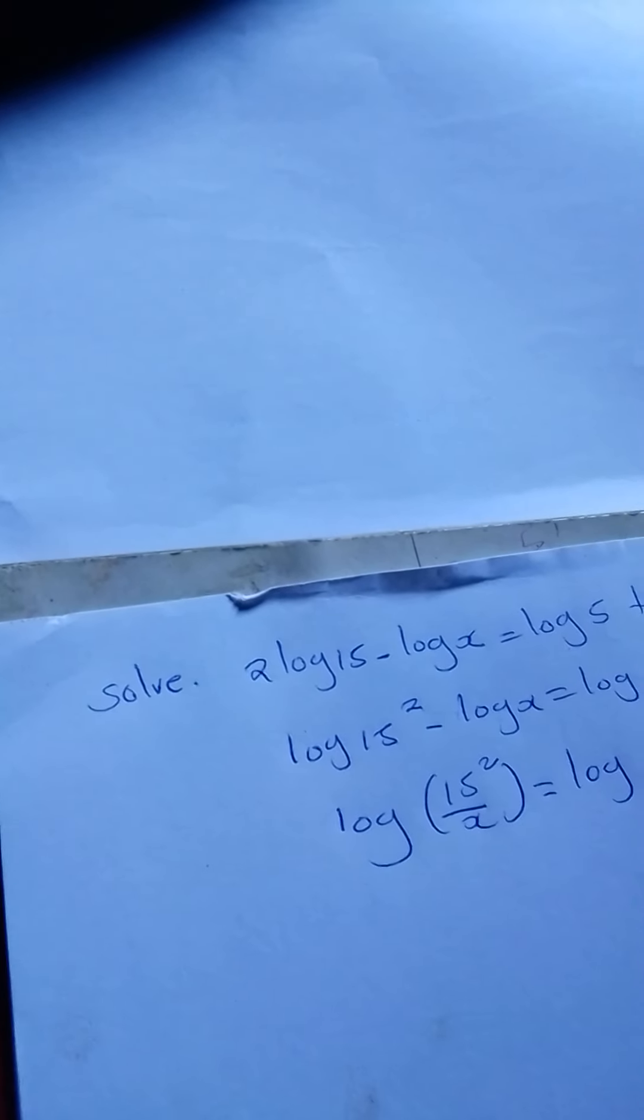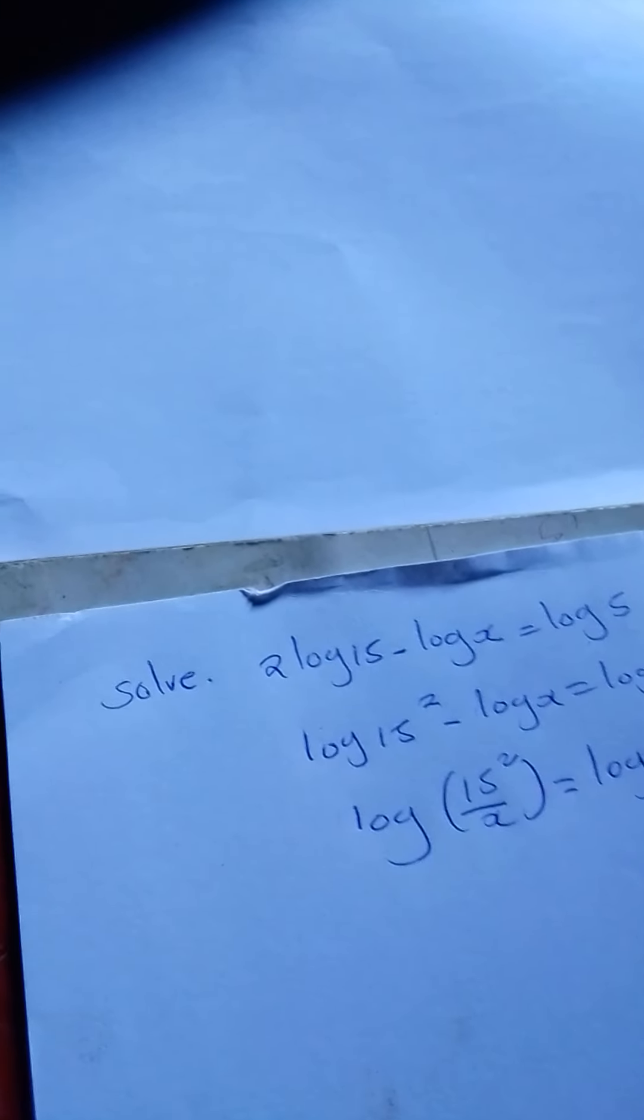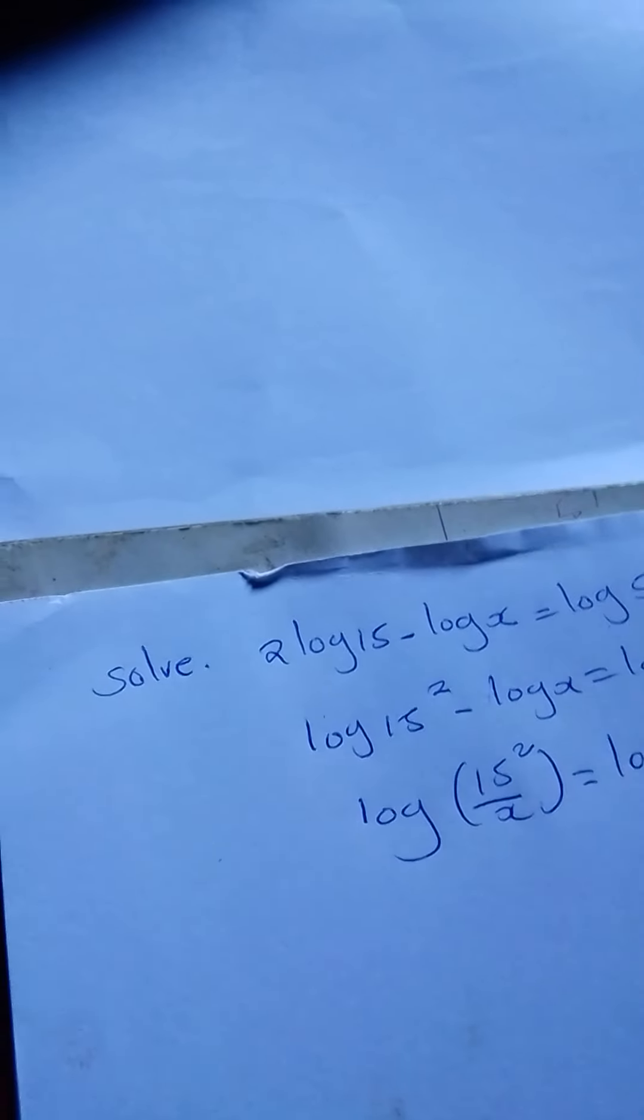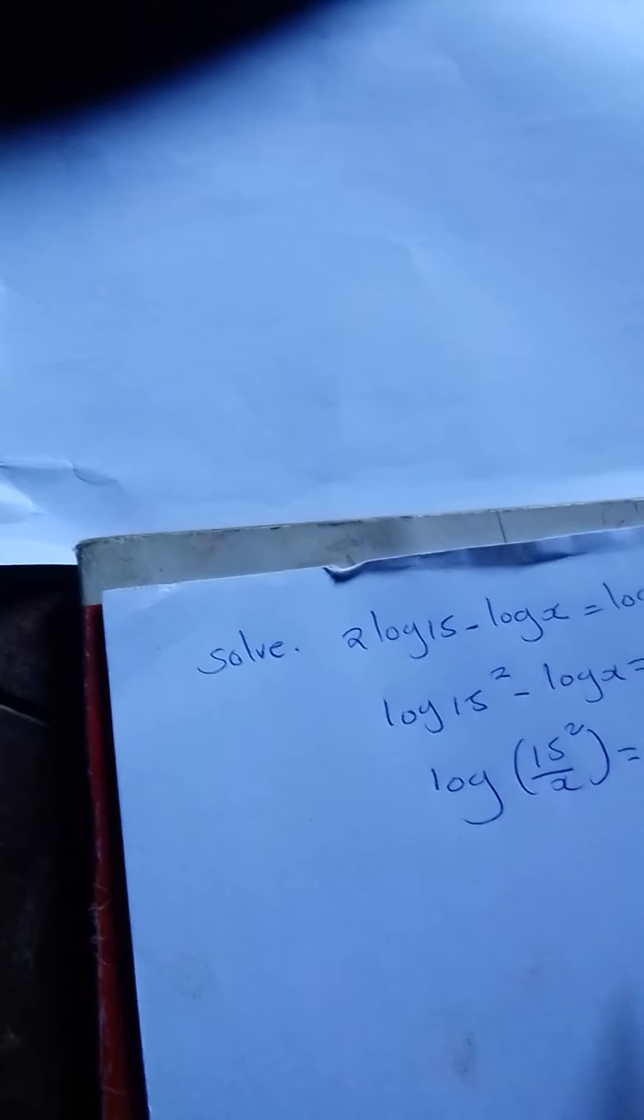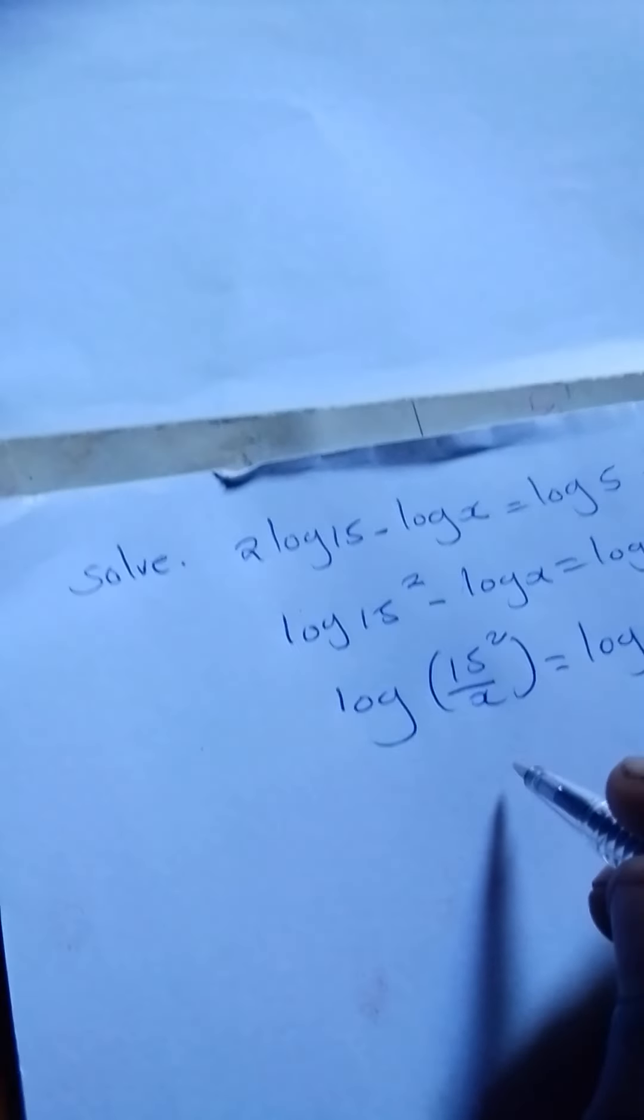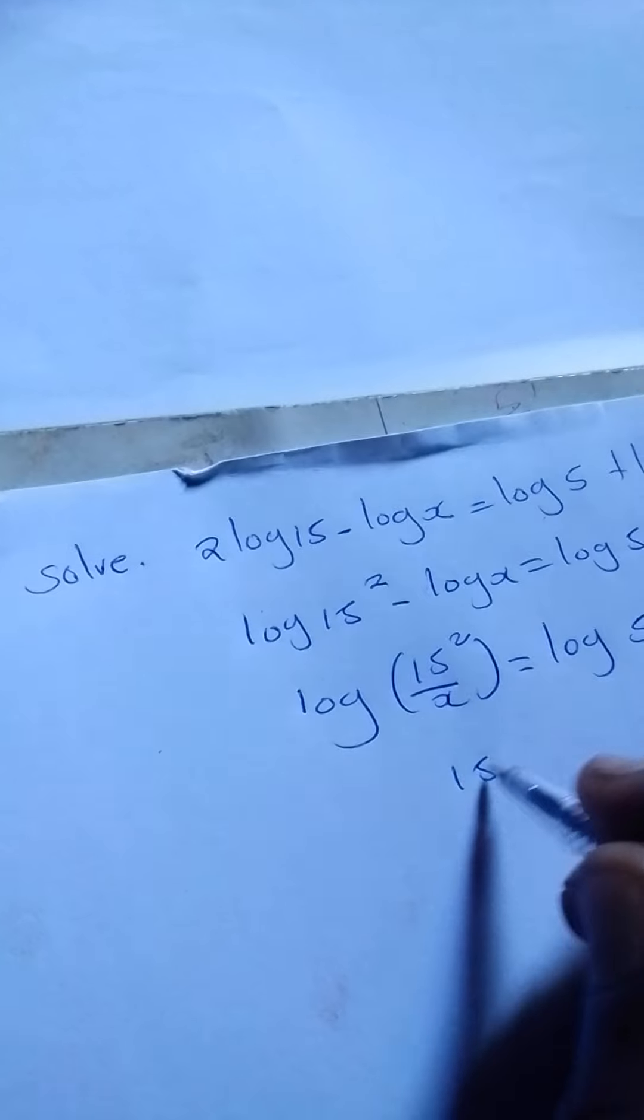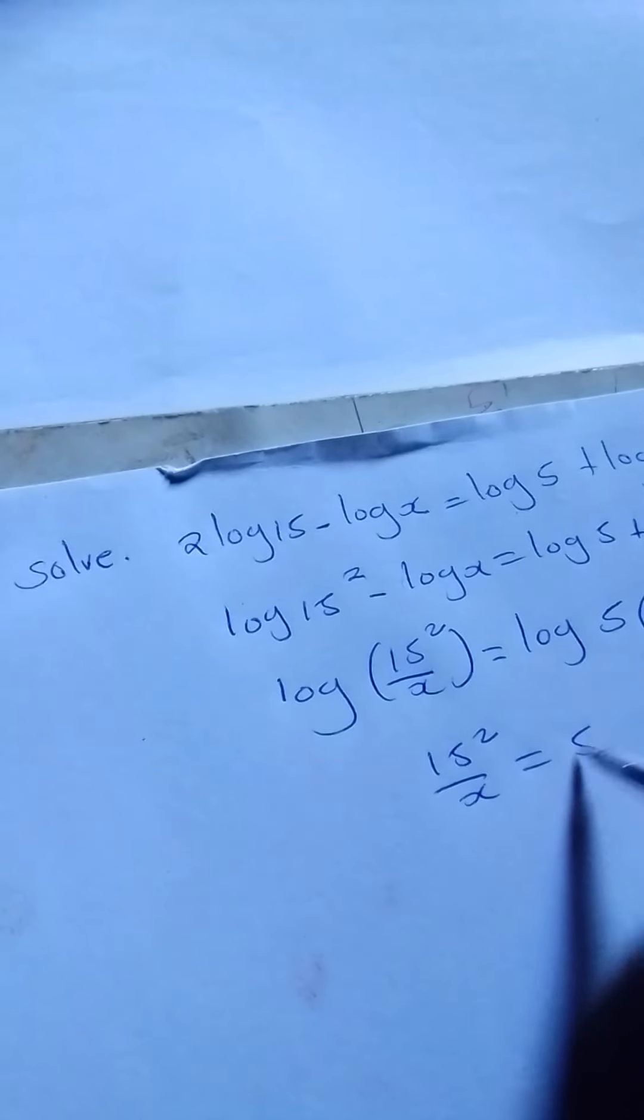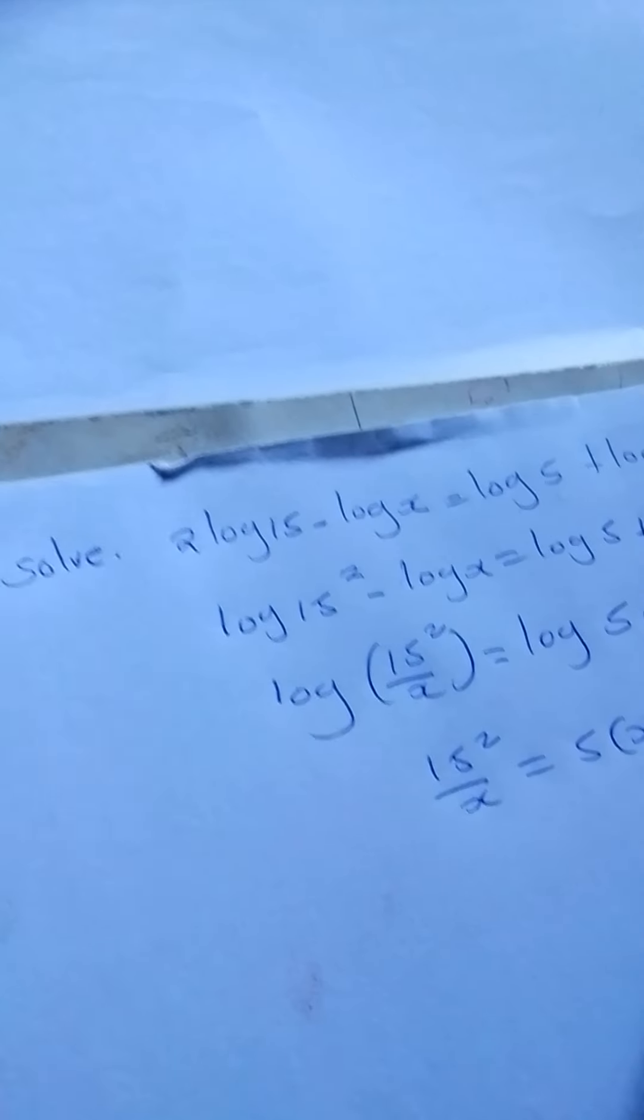Where there is a positive sign between the logs, it means multiplication. So it will be log[5(x-4)]. Then the logarithmic signs cancel. We remain with 15²/x = 5(x-4).